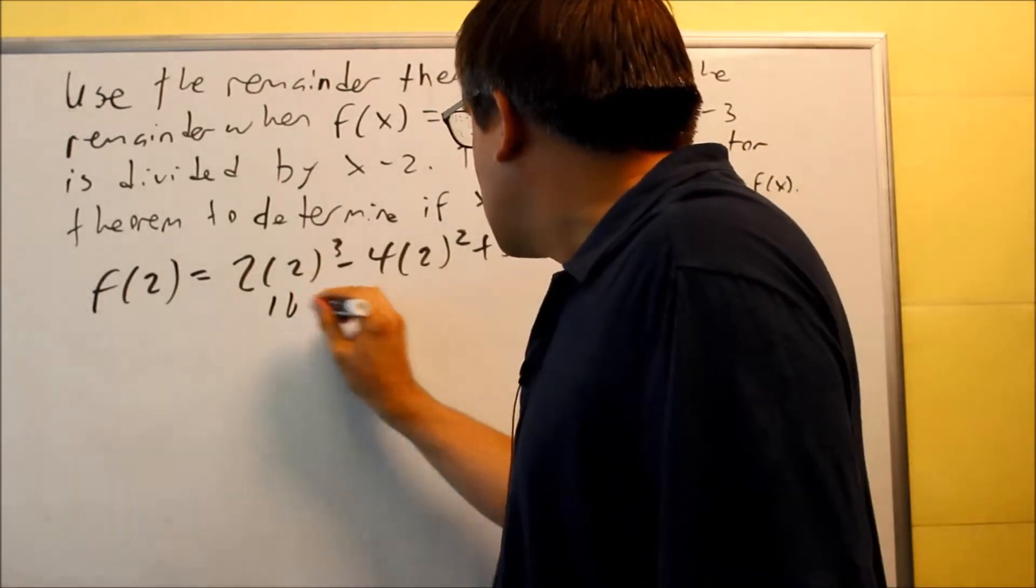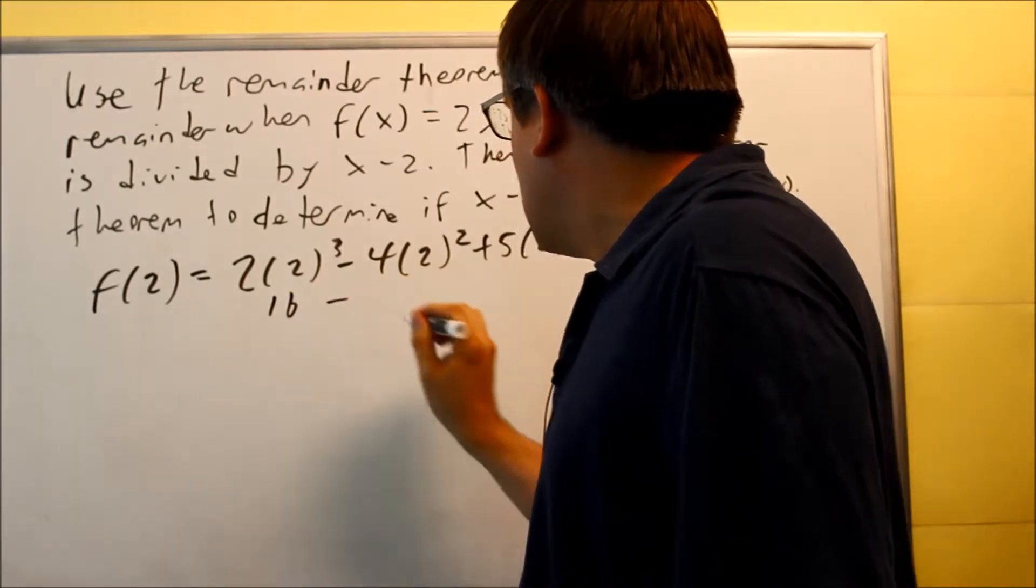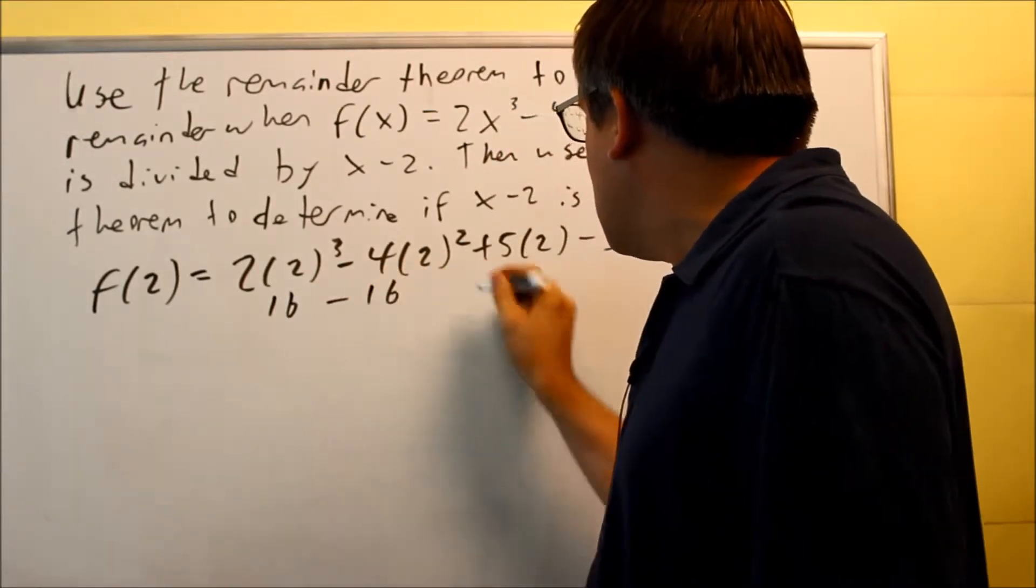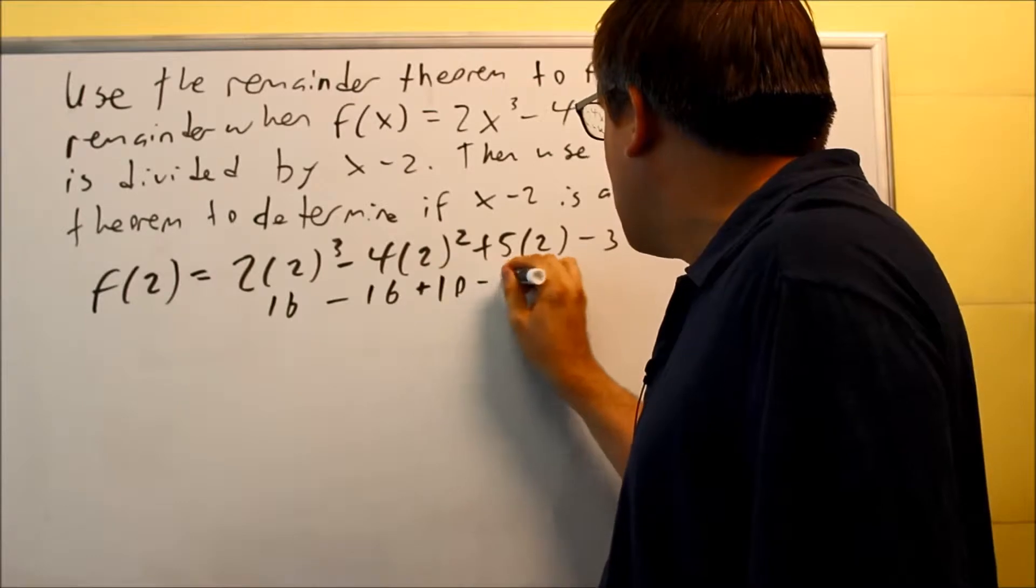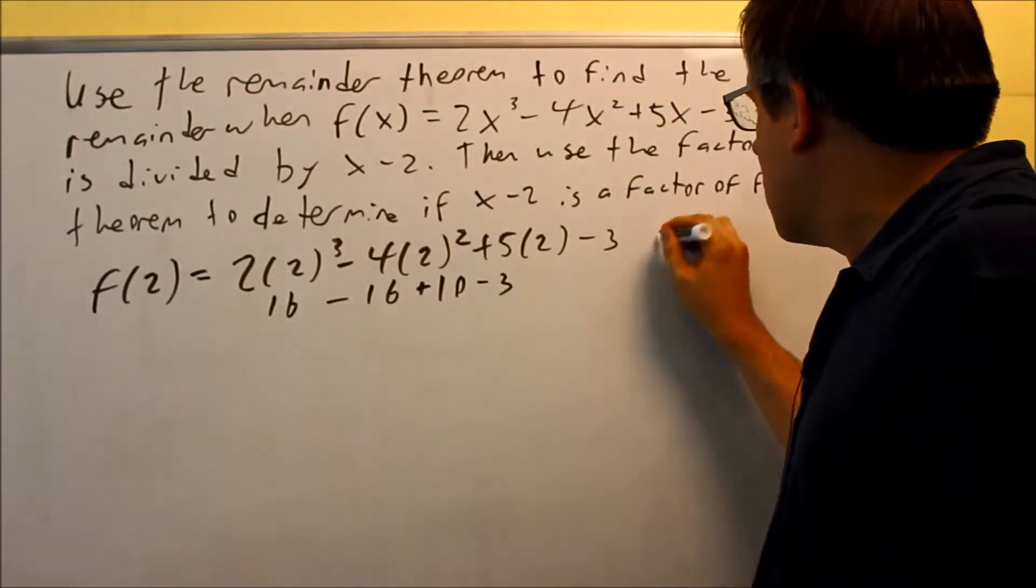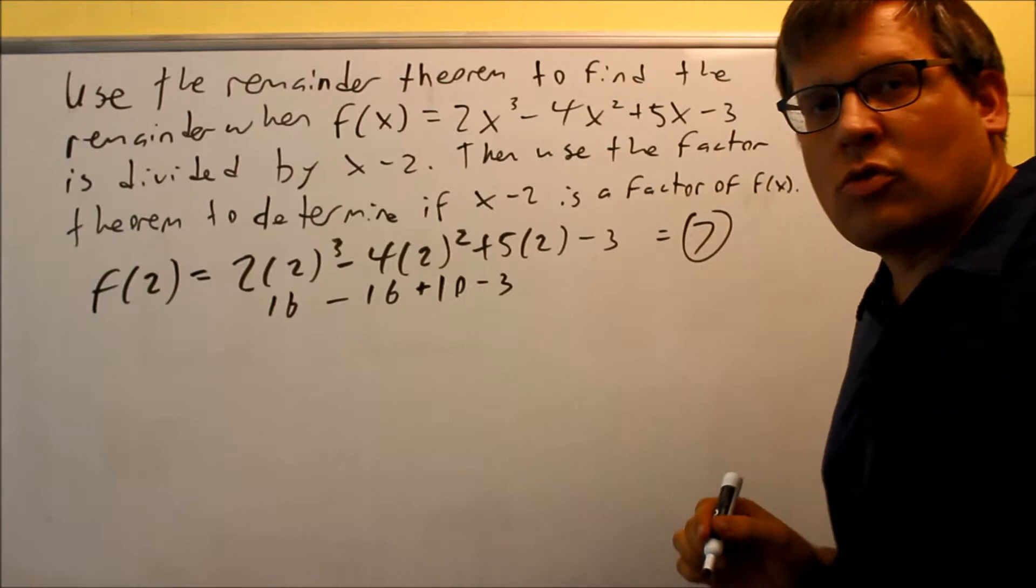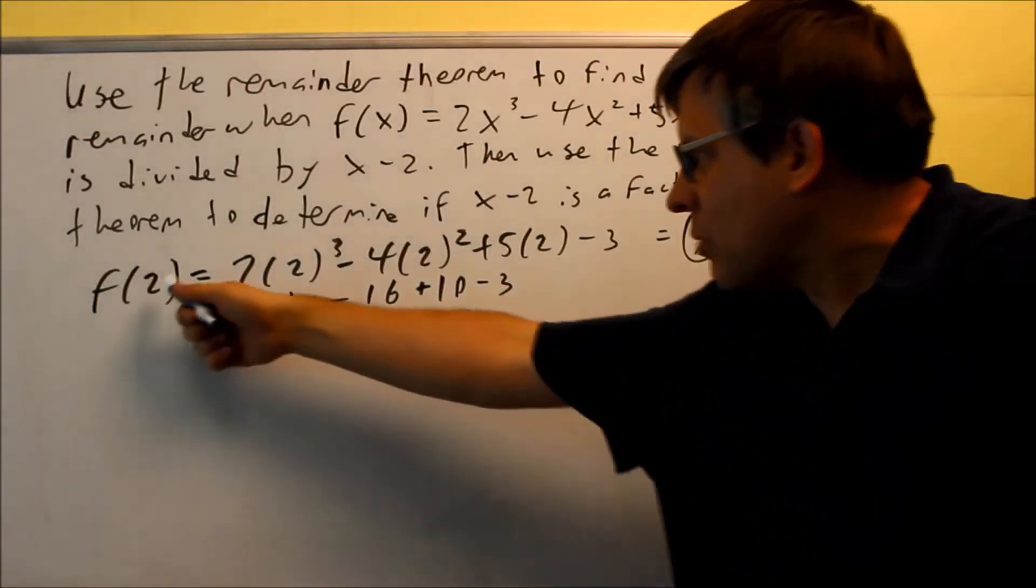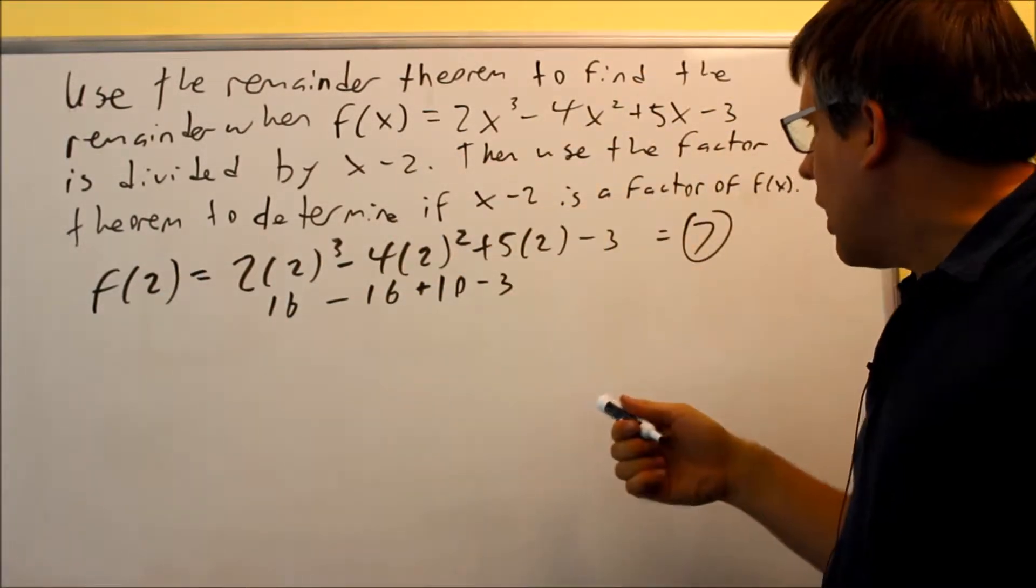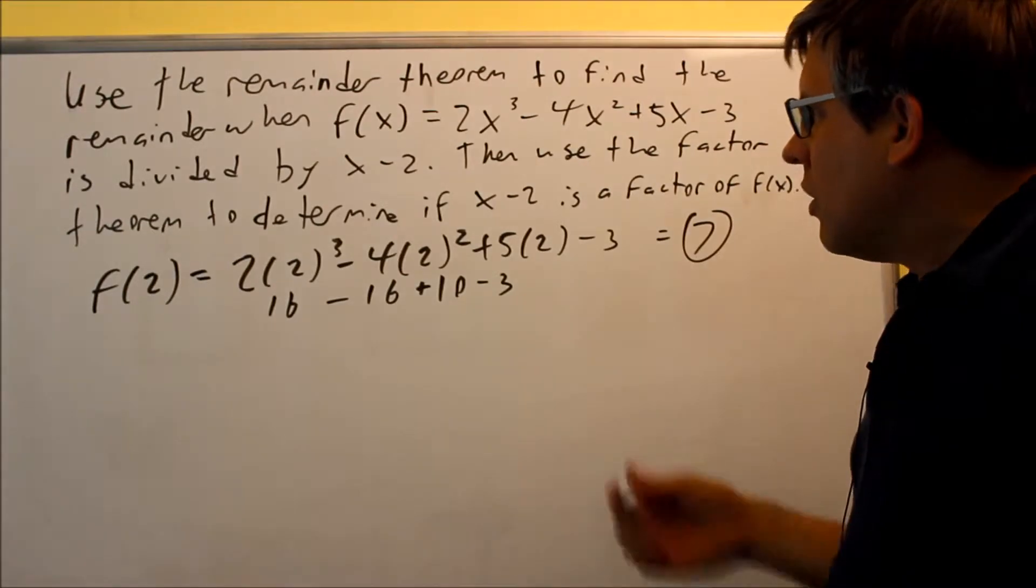Okay, so this is going to give us 16, and then this is also going to give us 16, and then I have 10, and then minus 3. This result is going to end up giving us 7 as a result. So that means all I did was I put 2 into the original one, and I got 7 as a result.